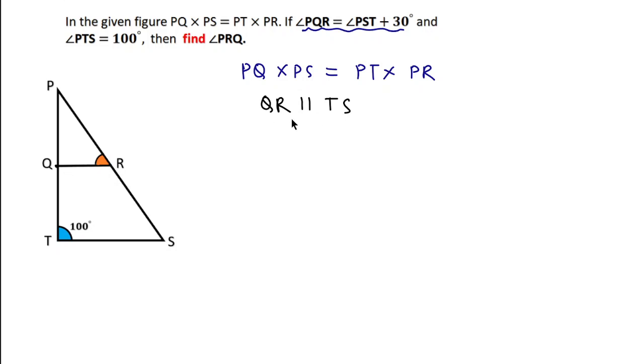By this information, we can write angle PQR equals angle PTS, which equals 100 degrees. This means this angle will also equal 100 degrees due to corresponding angles, because QR and TS are parallel and PT is the transversal.